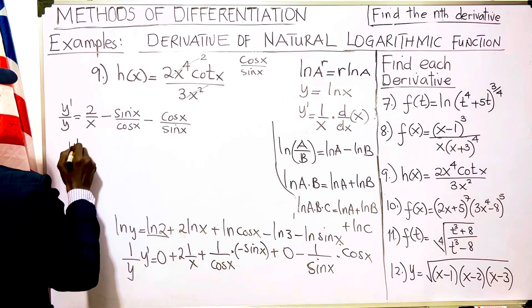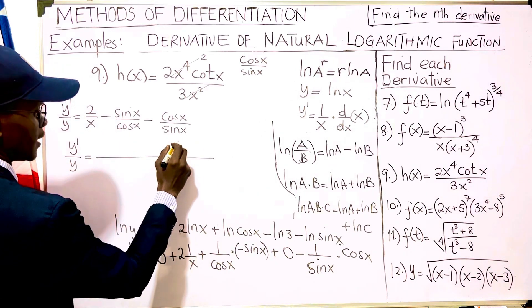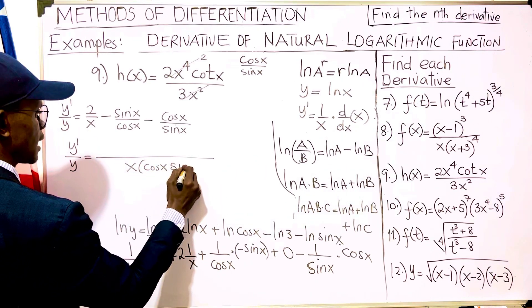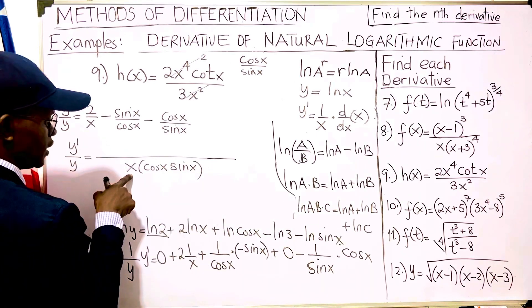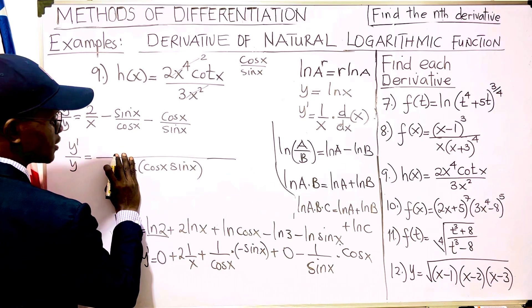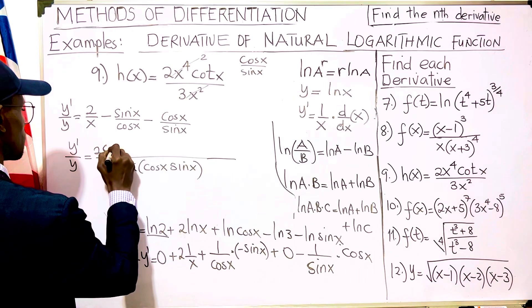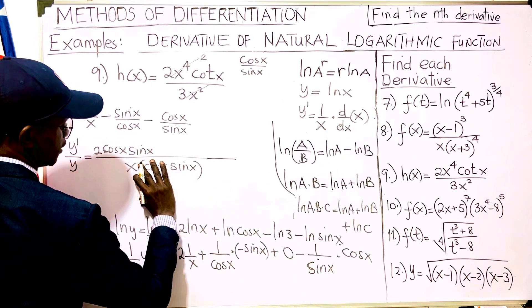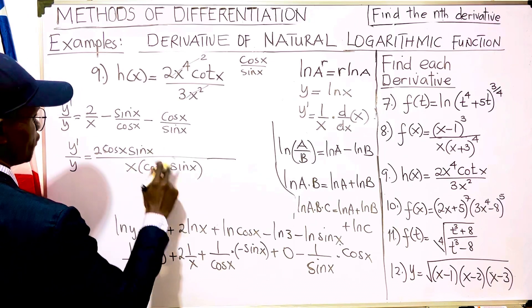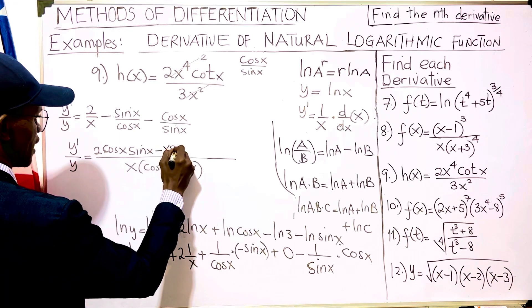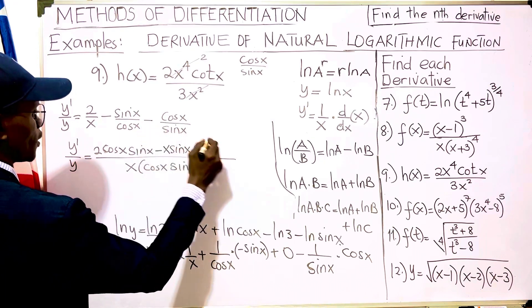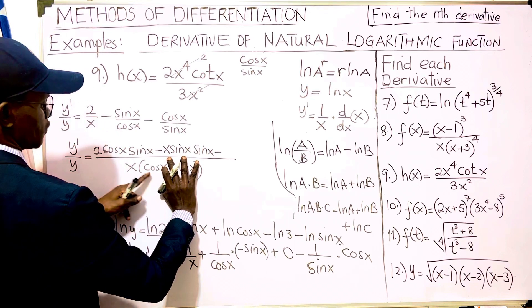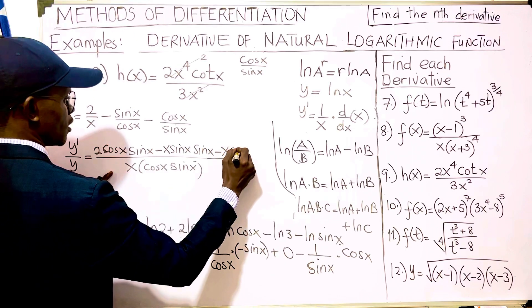Now we find the LCD for these three denominators, which is x·cos(x)·sin(x). x cancels into the first term leaving 2·cos(x)·sin(x); cos(x) cancels in the second leaving minus x·sin(x)·sin(x); and sin(x) cancels in the third leaving minus x·cos(x). So y prime over y equals [2 cos(x)sin(x) minus x·sin²(x) minus x·cos²(x)] over x·cos(x)·sin(x).